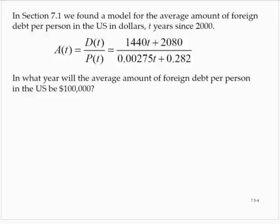In Section 7-1, we found a model for the average amount of foreign debt per person in the United States in dollars, t years since 2000. And we have this model. In what year will the average amount of foreign debt per person in the United States be $100,000?